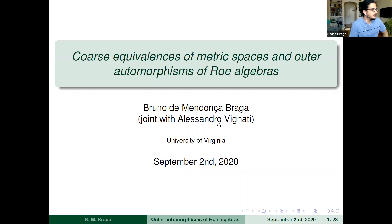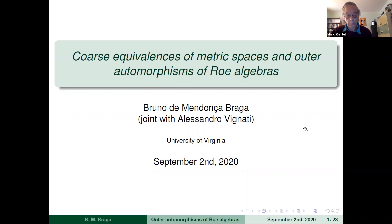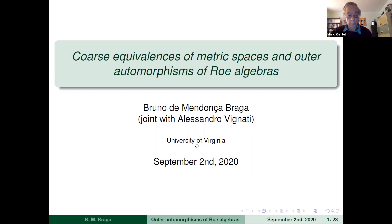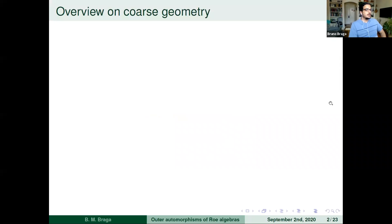Thank you very much, Yang and Guliang, for the nice invitation. I actually wasn't aware of this seminar, so it's nice to have another thing to attend during these lonely times. I'm going to be talking about a recent paper of mine with Alessandro Vignani on automorphisms of Roe algebras and coarse equivalences, and the similarity between the structure of those two. I'm a postdoc at the University of Virginia.